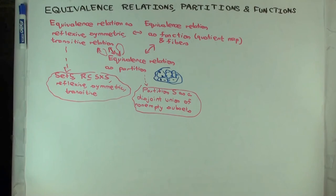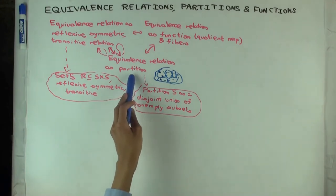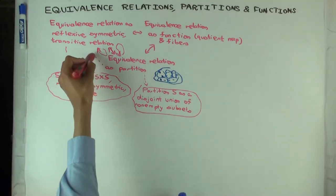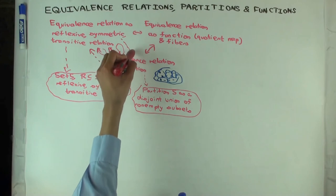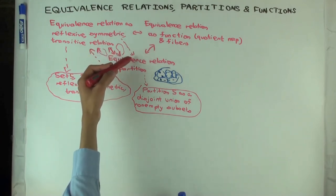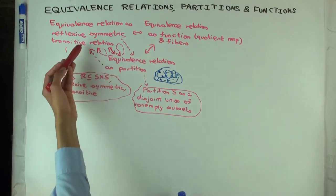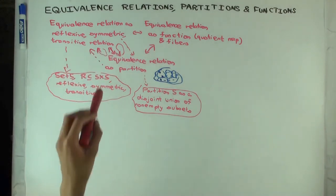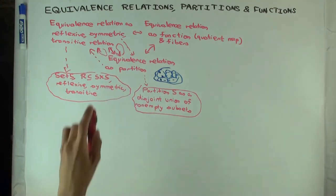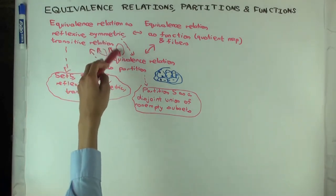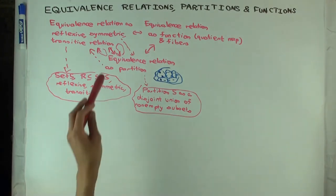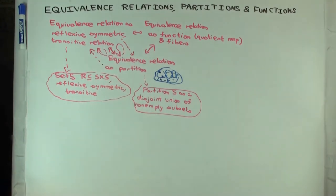Now that we've got the translations going both ways, what do we need to check to show that these descriptions are essentially structurally the same and give the same information? If you start with an equivalence relation, you can use the equivalence classes to construct a partition of the set. Then you start with this partition and use the rule to get an equivalence relation back. What you need to check is that the new equivalence relation you got is the same as the original one you started with.